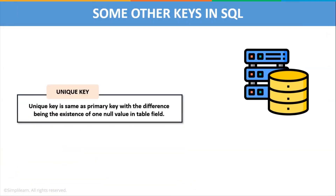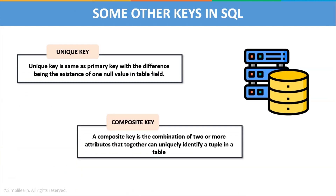We also have some other types of keys in SQL. The unique key is the same as a primary key with the difference being the existence of one null value in a table field or row. For example, in a student table, if a student leaves school their role number might be deleted while their student ID is preserved — so role number can be considered a unique key. We also have the composite key, which is a combination of two or more attributes that together can uniquely identify a tuple in a table.